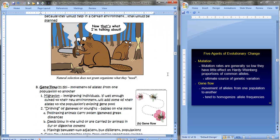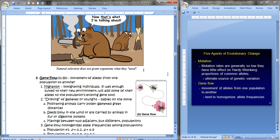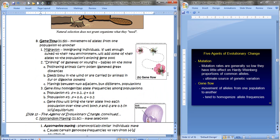Next, let's take a look at gene flow. Gene flow is just the movement of alleles from one population to another. Now how does this happen? One way that this can happen is through migration. Immigrating individuals, if they're well enough suited to their new environment, they can add some of their alleles to the population's existing gene pool.